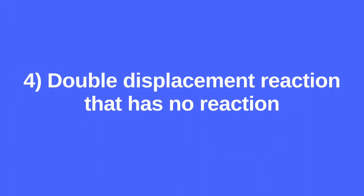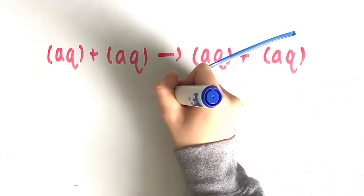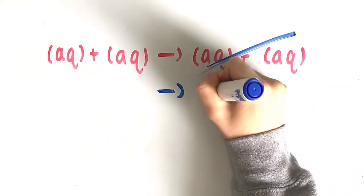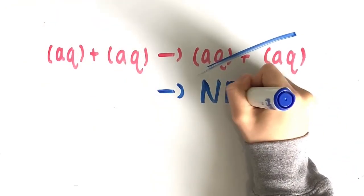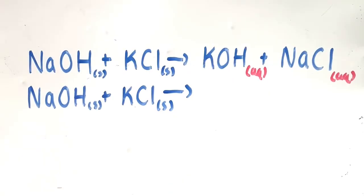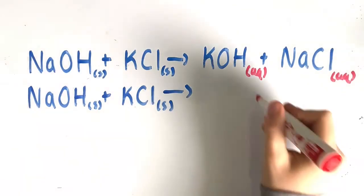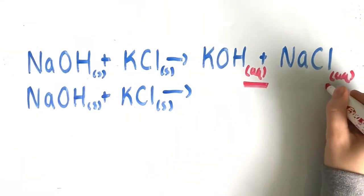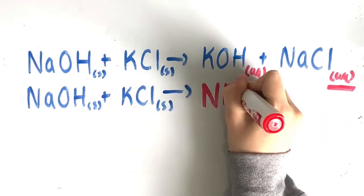Lastly, we have double displacement reactions that have no reaction. If the two products formed are both soluble, meaning they're both aqueous, then there is no reaction. For example, sodium hydroxide plus potassium chloride yields potassium hydroxide plus sodium chloride. But since potassium hydroxide and sodium chloride are both aqueous, there is no reaction.